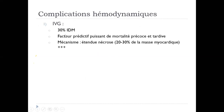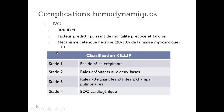Les complications précoces : l'insuffisance ventriculaire gauche, c'est 30% des EDM, c'est un facteur prédictif puissant de mortalité précoce et tardive. Mécanisme : l'étendue de nécrose. Lorsqu'on a une nécrose supérieure à 20-30%, les signes d'insuffisance ventriculaire gauche vont commencer à apparaître. D'où la classification de Killip : stade 1, pas de râles crépitants ; stade 2, râles crépitants aux bases ; stade 3, les râles atteignent deux tiers des champs pulmonaires ; stade 4, c'est l'état de choc cardiogénique.